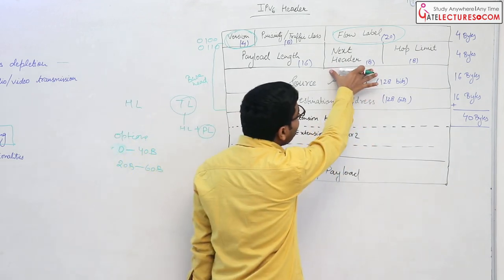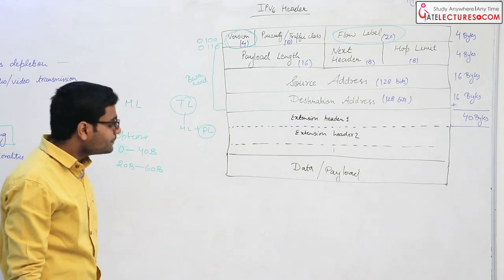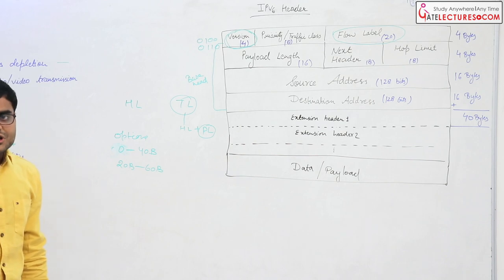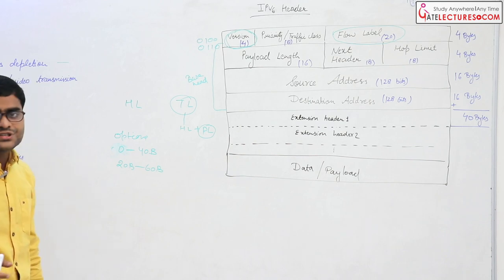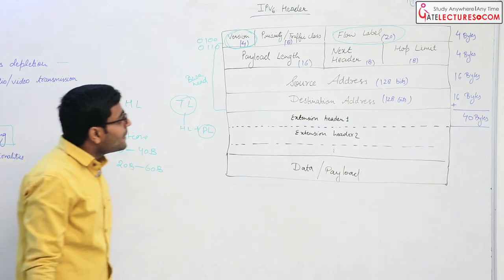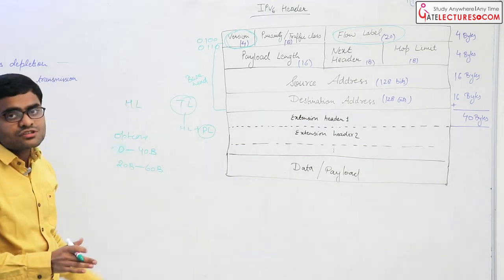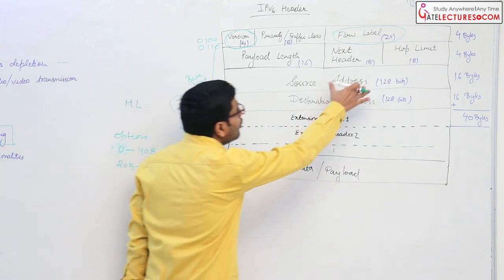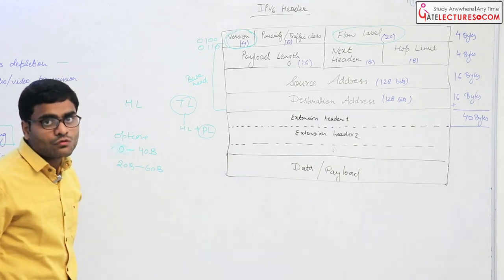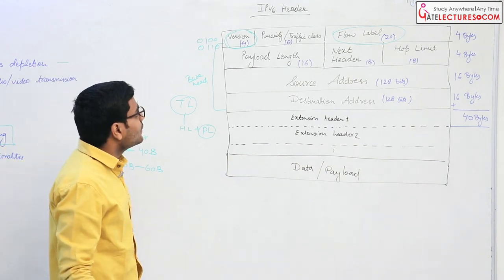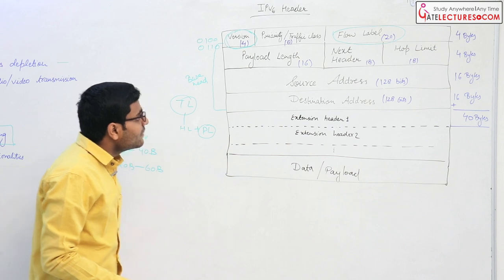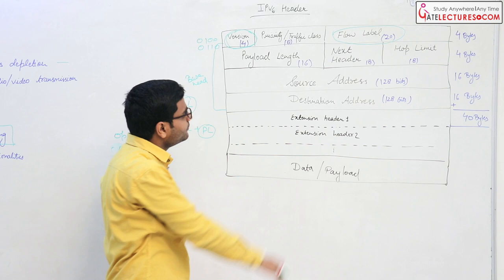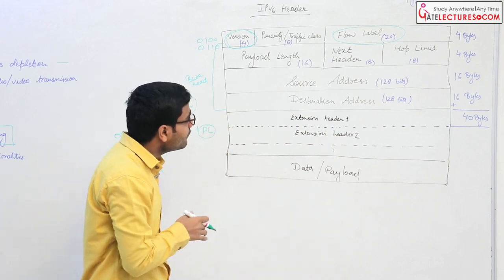The next field is called the next header field. In IPv4, additional functionality was provided through the variable options field. In IPv6, to keep the header length fixed, we replace options with the next header field. Whatever additional functionality a data packet needs to provide is handled in the form of a next header. This will be elaborated shortly.